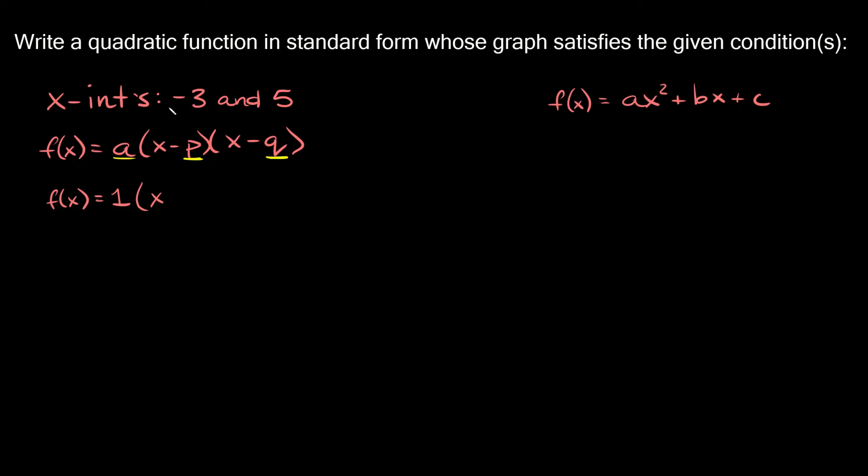Okay, but when you plug it into your parentheses you want to put the opposite sign. So since here we have a negative 3, here we're going to write that as positive 3. And then for our other set of parentheses over here we're going to have x, and then here we have a positive 5, so here we're going to write it as a minus 5. Okay, that's the only trick with writing these in intercept form. You just want to make sure you flip the signs from what your x-intercepts are.